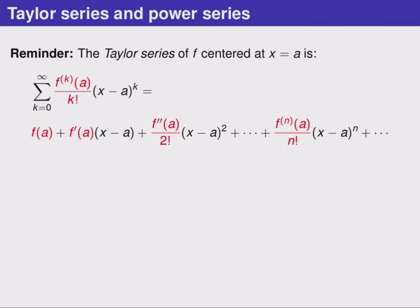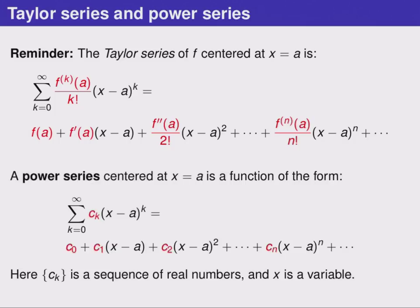By taking that idea we can define a new thing which is called a power series. A power series centered at x equals a is a function in this form, and you notice that this form is extremely similar to the form above. In fact, the difference is we replaced this complicated function or part in front of each polynomial with something called c sub k. The sequence c sub k is a sequence of real numbers and it can represent any list of real numbers that we want.